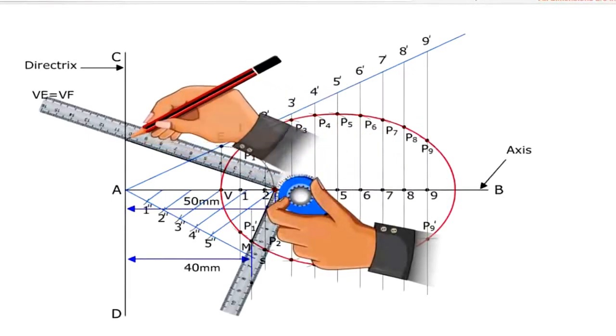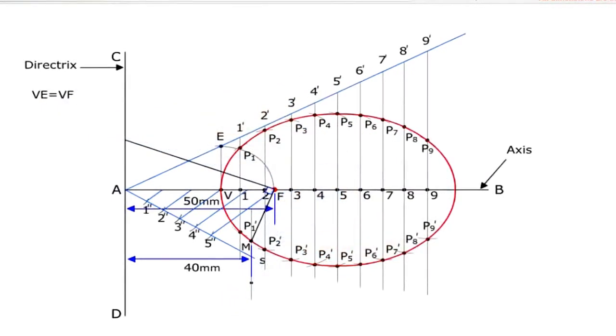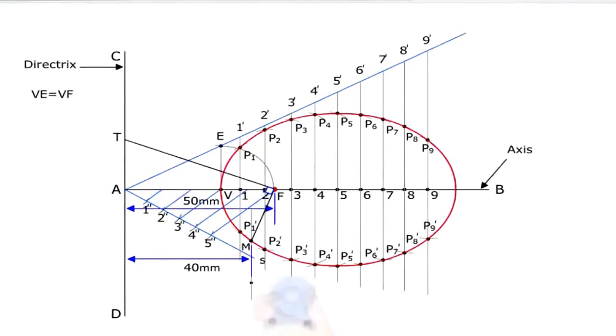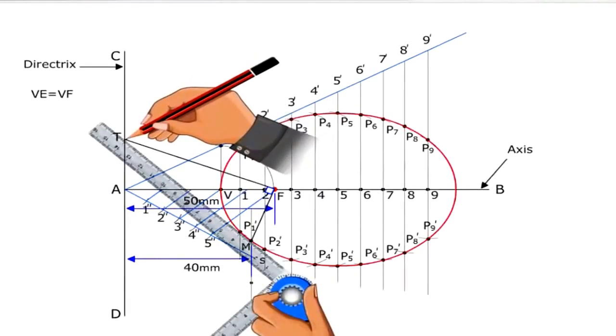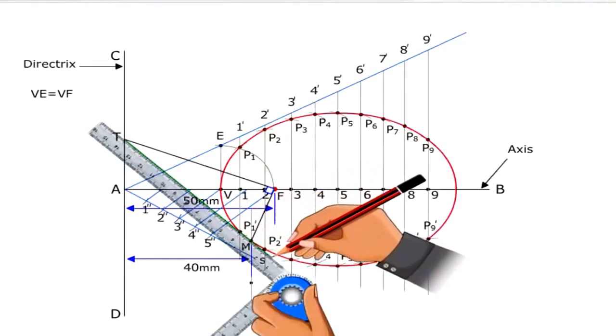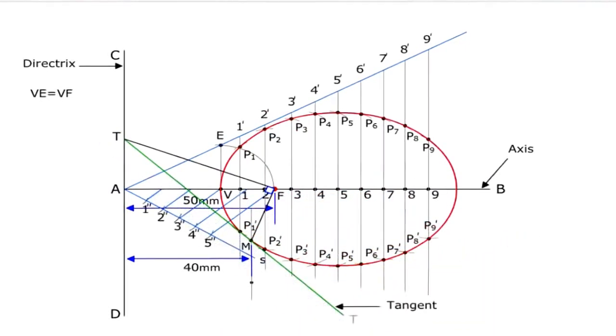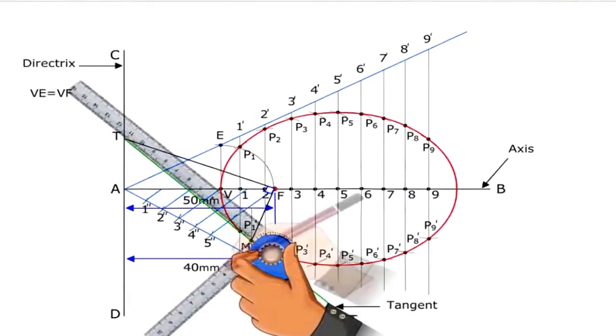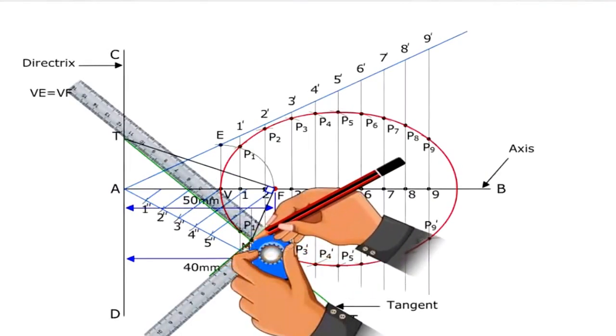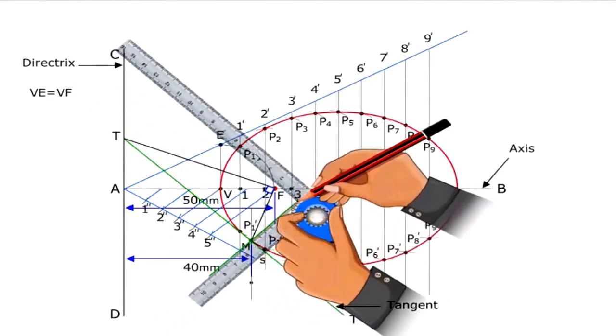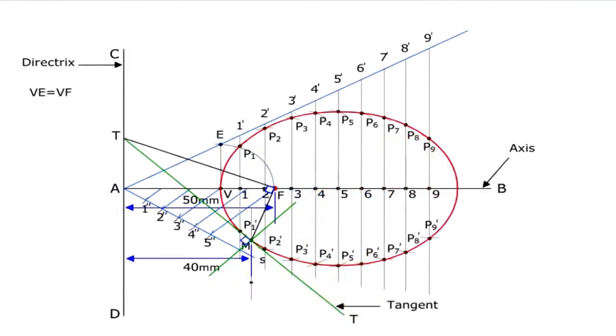Draw a line through F perpendicular to MF meeting the directrix at T. The line joining T and M and extended is the tangent to the ellipse. Draw a line N-N perpendicular to the tangent. This is the normal NN to the ellipse.